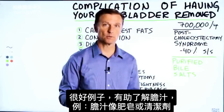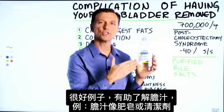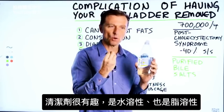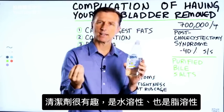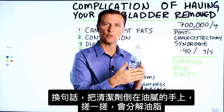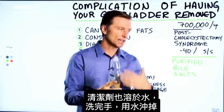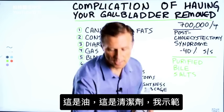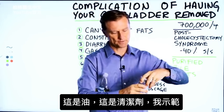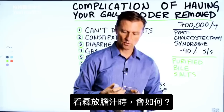A good analogy to help you understand what bile is: it is soap or a detergent. Detergent is very interesting because it is both water-soluble and fat-soluble. In other words, you can put it on fat, like greasy hands, and rub it all around, and it will break down the fat, making it more water-soluble. So you can wash your hands and it can go down the drain. So this is oil, and this is detergent — I'll show you what happens as an analogy to what happens when you release bile.